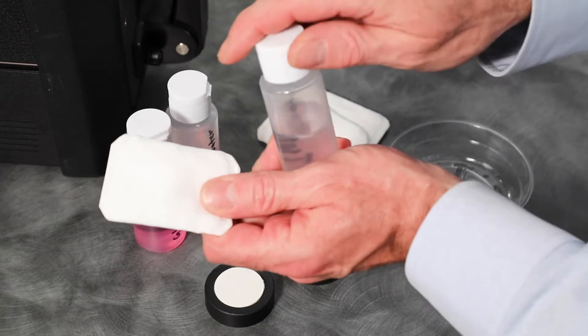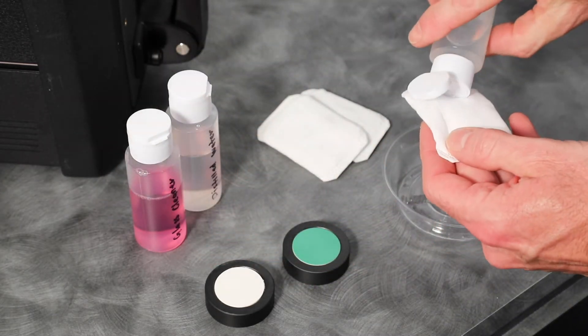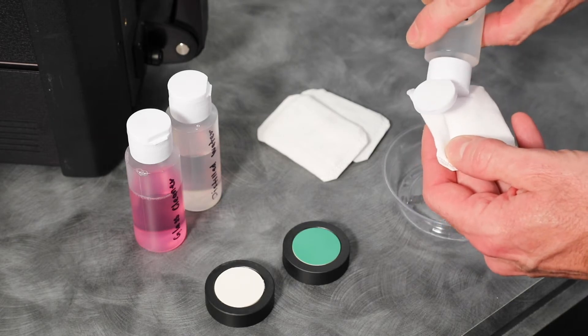Apply a small amount of isopropyl alcohol onto a portion of your lint-free wipe and clean the entire surface in a circular motion.